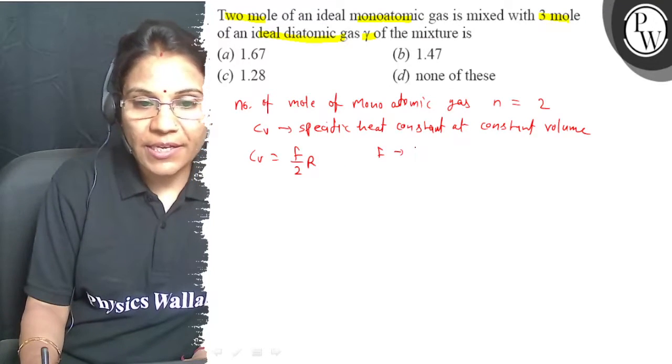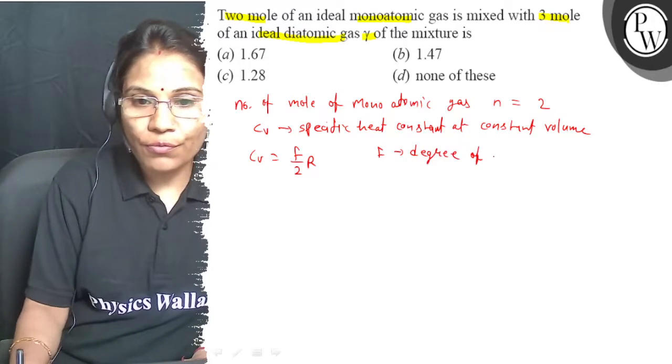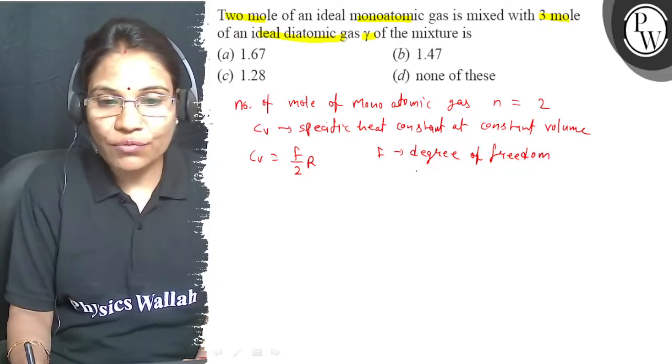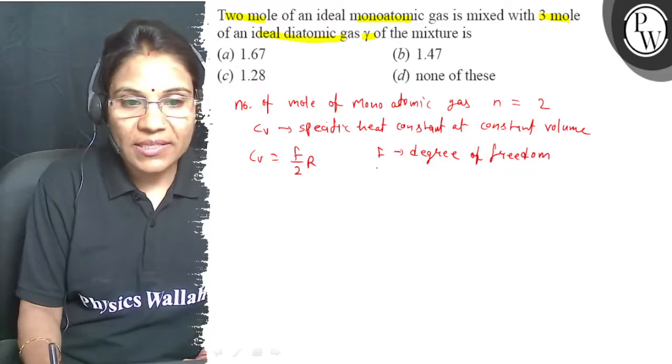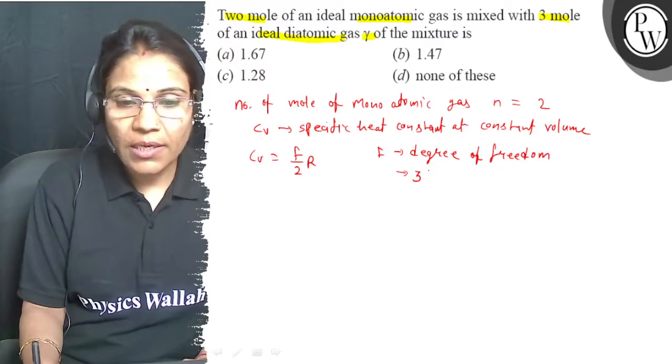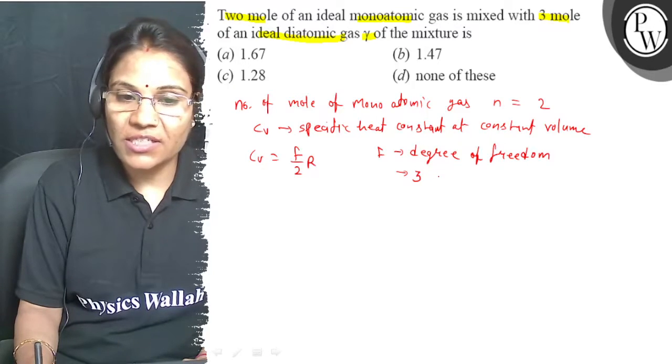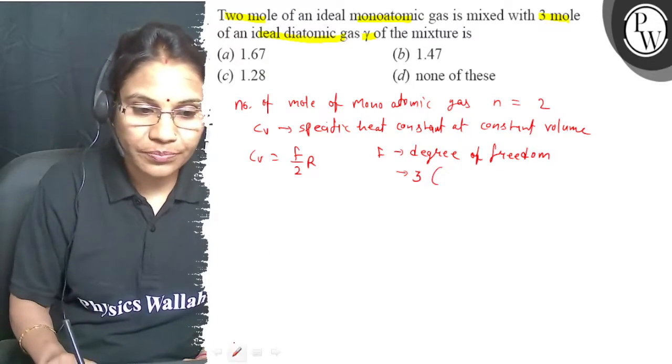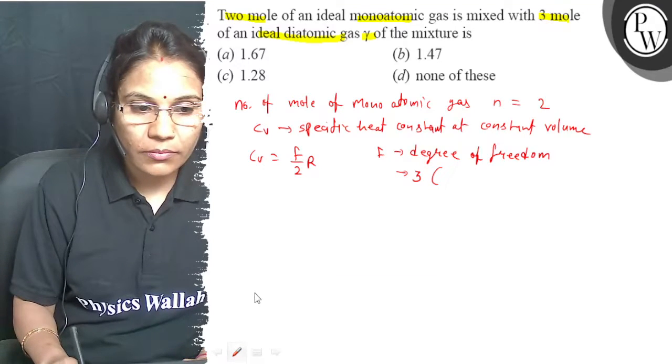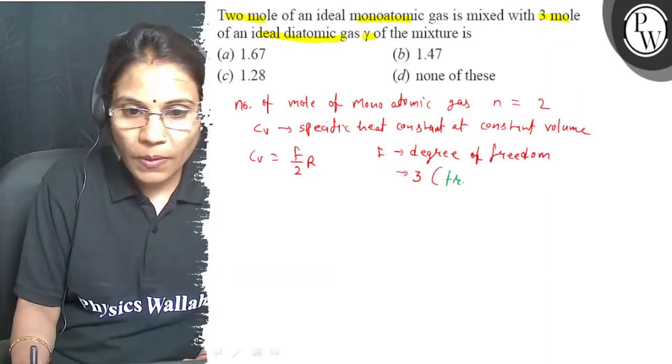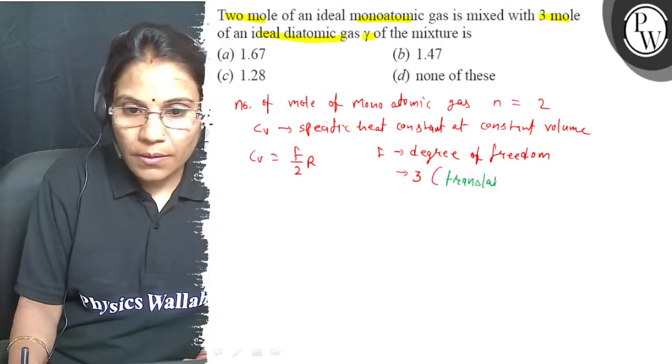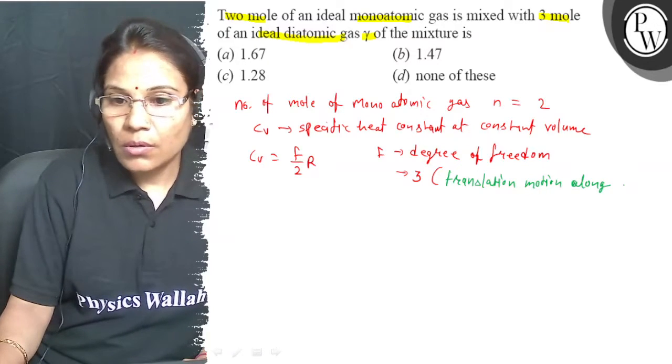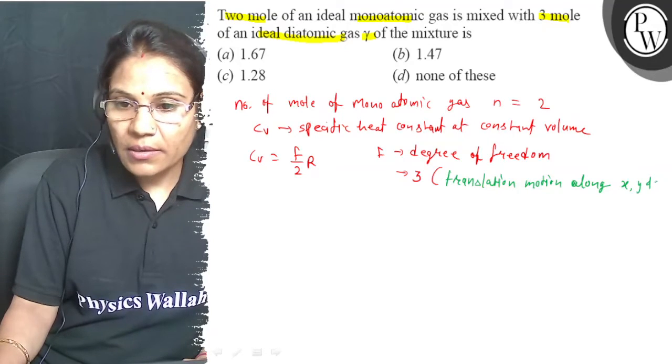Here f is the degree of freedom. Degree of freedom is the motion of the particle. For monoatomic gas, degree of freedom value is 3, because monoatomic particle can do translational motion in 3 directions. It cannot rotate. This degree of freedom is due to translation motion along x, y and z axis.